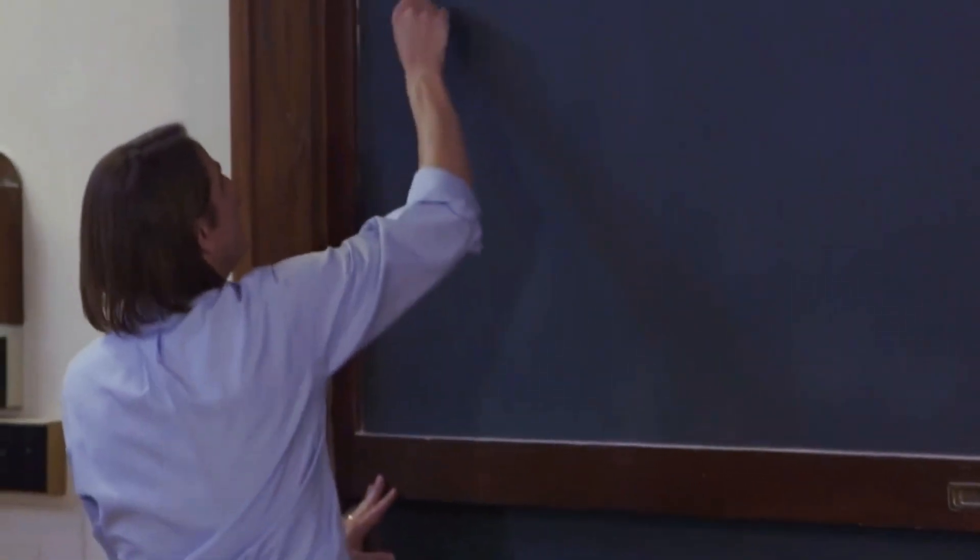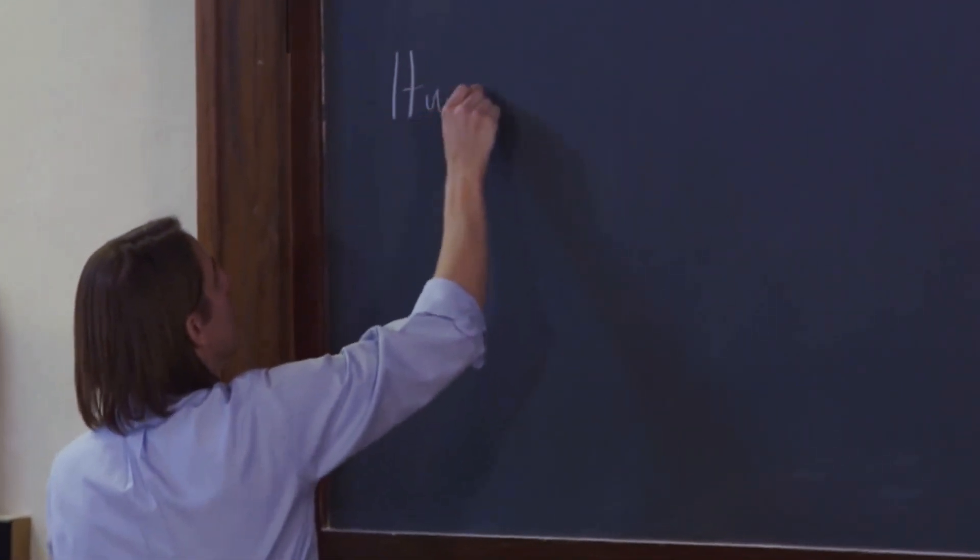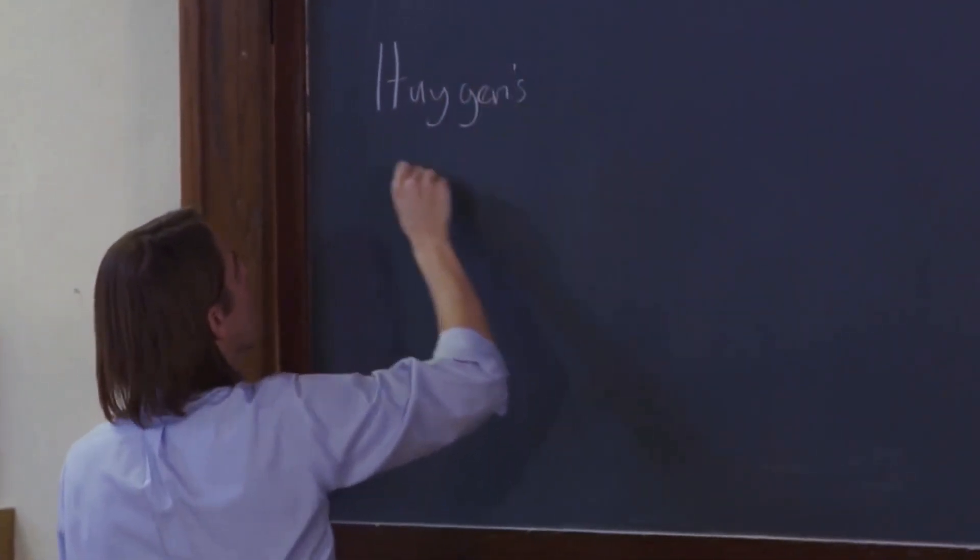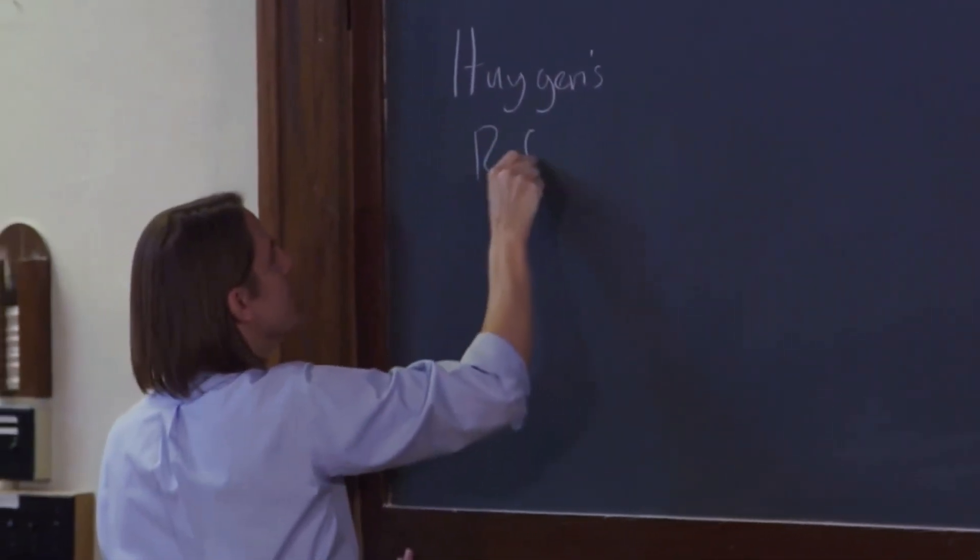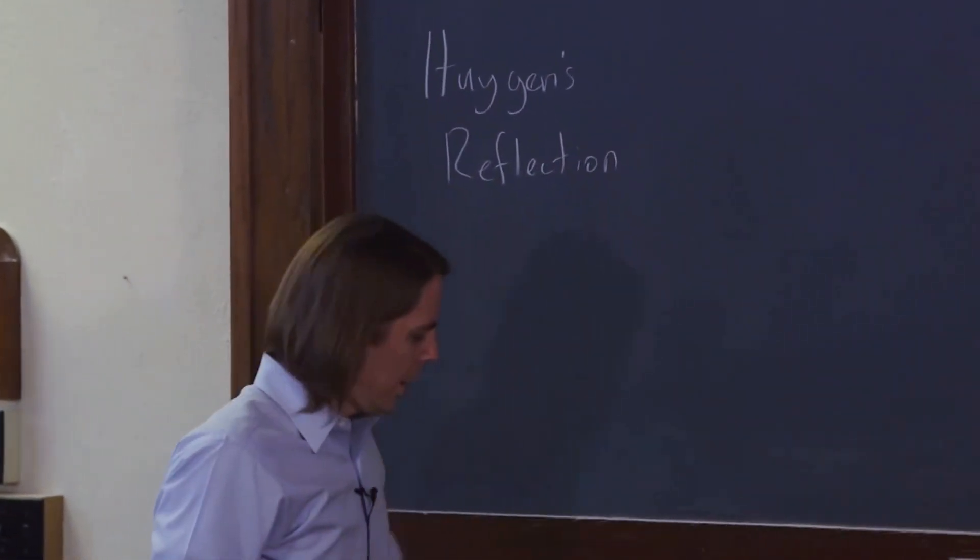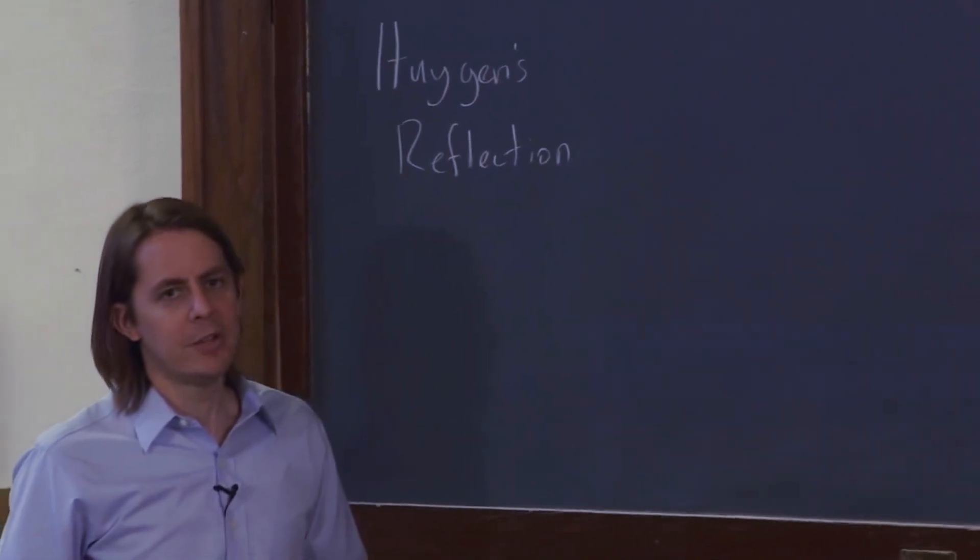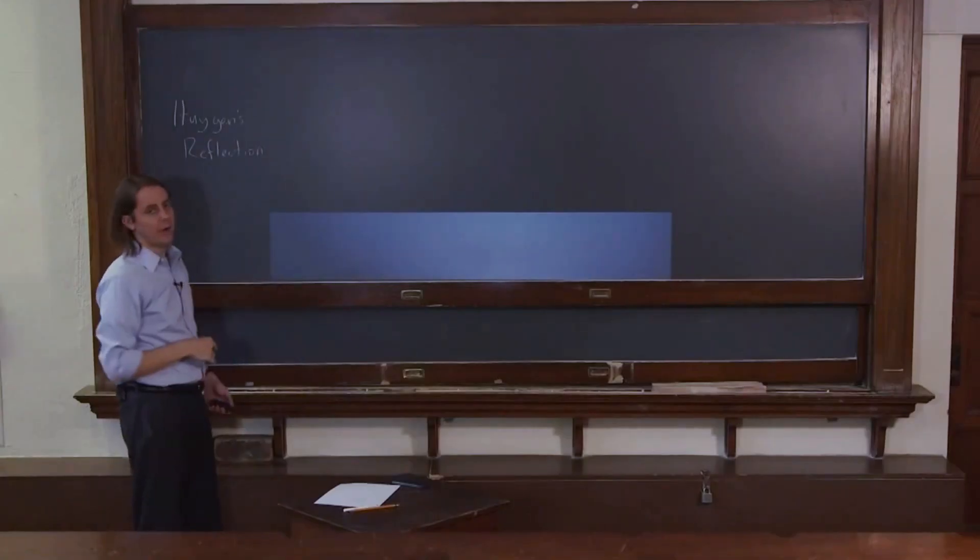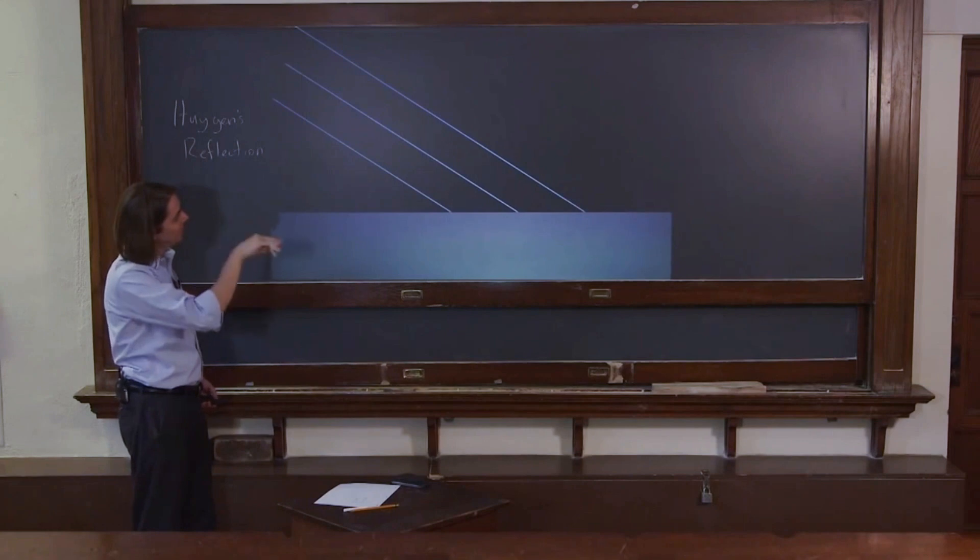So let's use Huygens' principle to look at reflections. We'll do Huygens' reflection. Let's imagine that we have our dielectric surface and that light comes in.